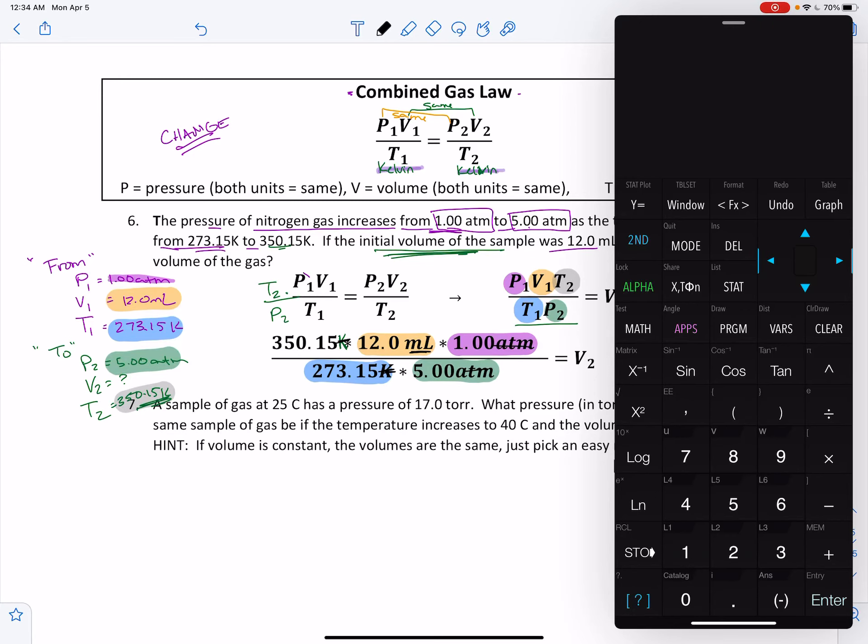Our volume unit is going to be in milliliters. We're going to put this in the calculator, 350.15 times 12.0 times 1.0.